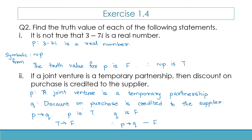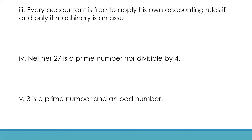Let's do the next one. Every accountant is free to apply his own accounting rules if and only if machinery is an asset. The symbolic form will be P double implication Q. Here P is: every accountant is free to apply his own accounting rules, and Q is: machinery is an asset. This is P double implication Q. Now let us look at the truth values of both.